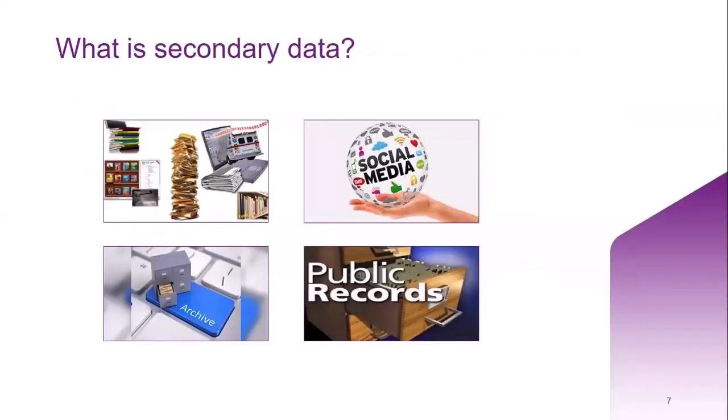Let's begin with what secondary data is. Unlike primary data, which is collected by a researcher directly from the original source, secondary data is existing data gathered from studies, surveys, and experiments that have been run by other people or for other research. For example, existing data available at archives like ours, from government organizations, essays, reviews, or information from social media.